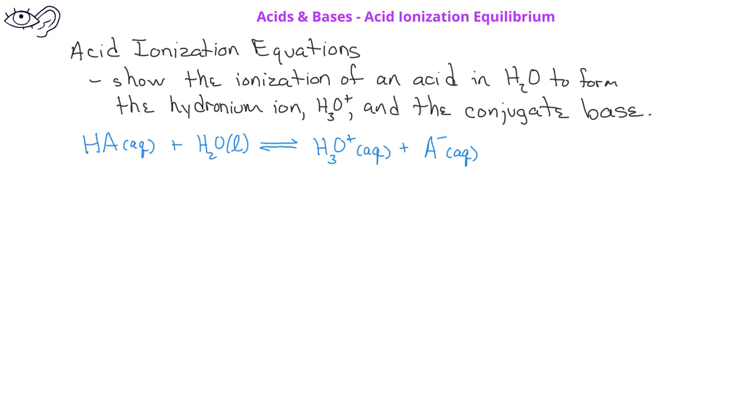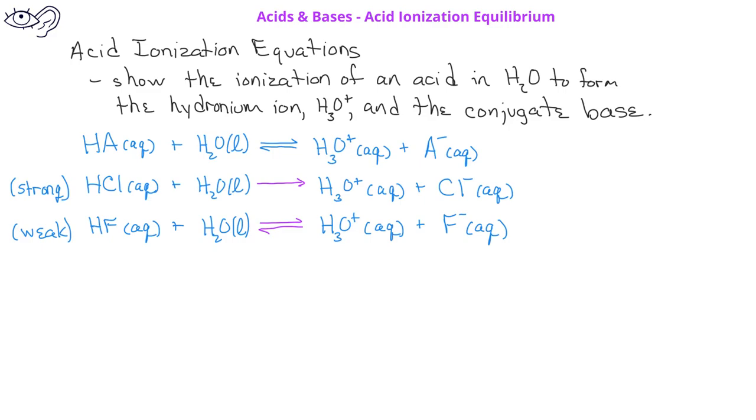For a strong acid, which has complete ionization, we would use a one-directional arrow to indicate that, at equilibrium, we only have hydronium ions and anions present in solution. However, for a weak acid, we would use the equilibrium arrow to indicate that, at equilibrium, we have both the undissociated acid, the hydronium ion, and the anion, all present in solution.